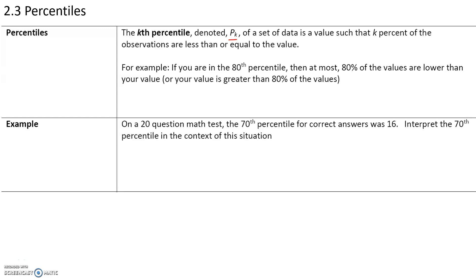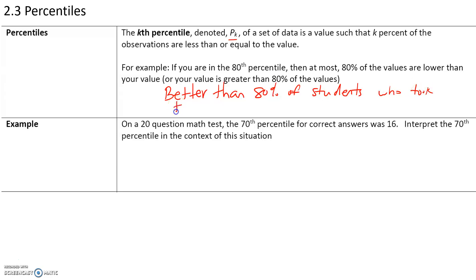On a test, let's say you performed in the 80th percentile. It doesn't mean you got an 80%. What it means is that you did better than 80% of students who took the test. The 80th percentile does not mean you got an 80% on the exam — it just means you did better than 80% of students who took the exam.